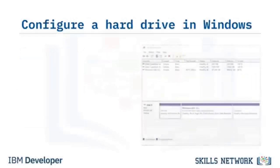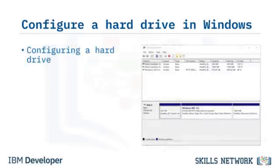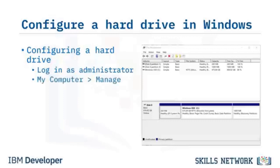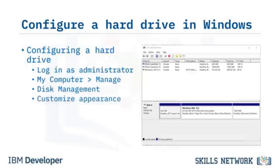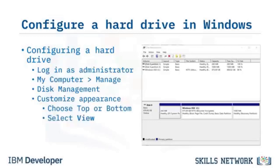To configure a hard drive in Windows, log on as an administrator, right-click on My Computer, select Manage, and in the console tree select Disk Management. To customize how you view disks and volumes in the upper and lower panes, point to Top or Bottom on the View menu, select the view you want, and make your choice of appearances.